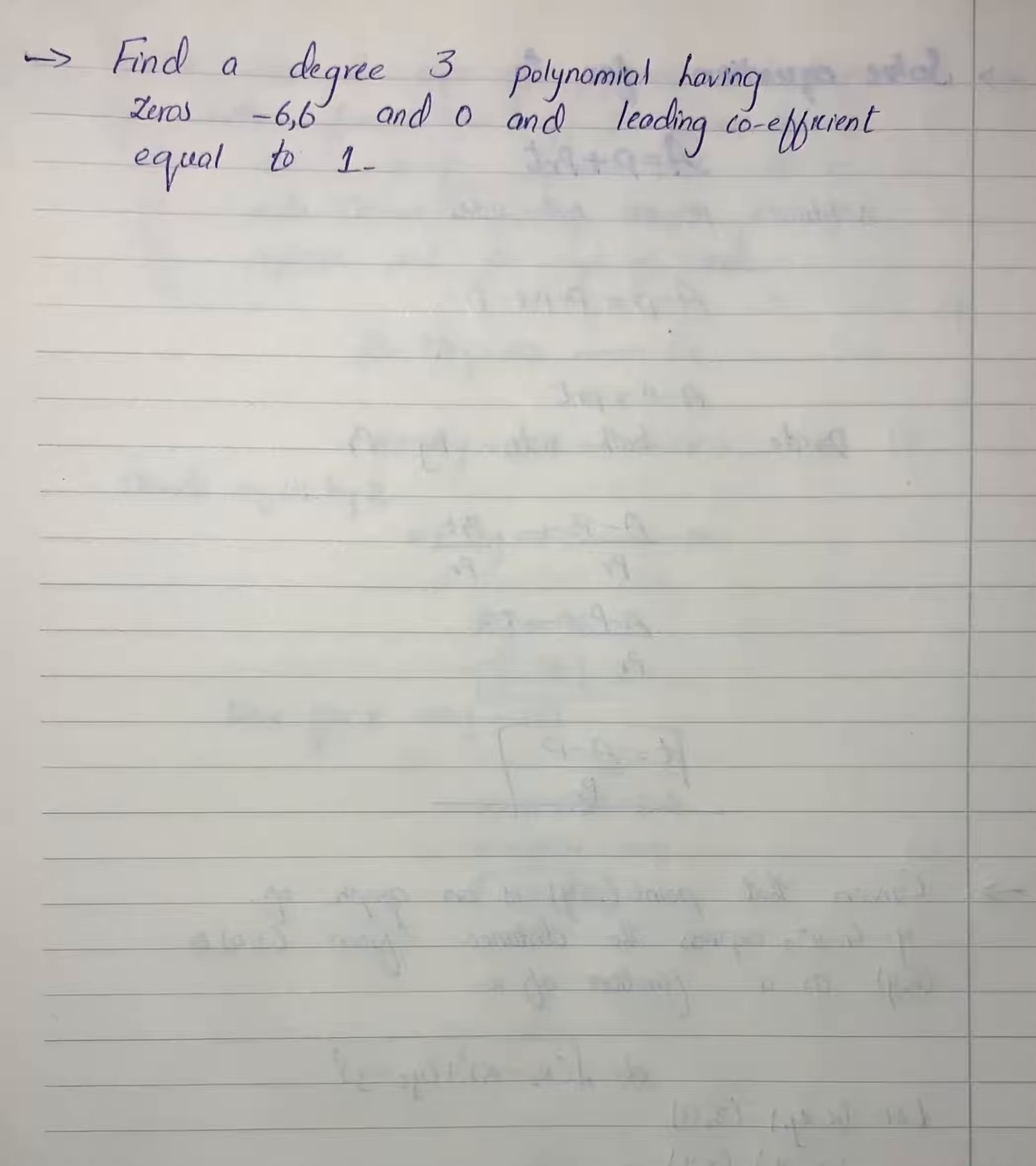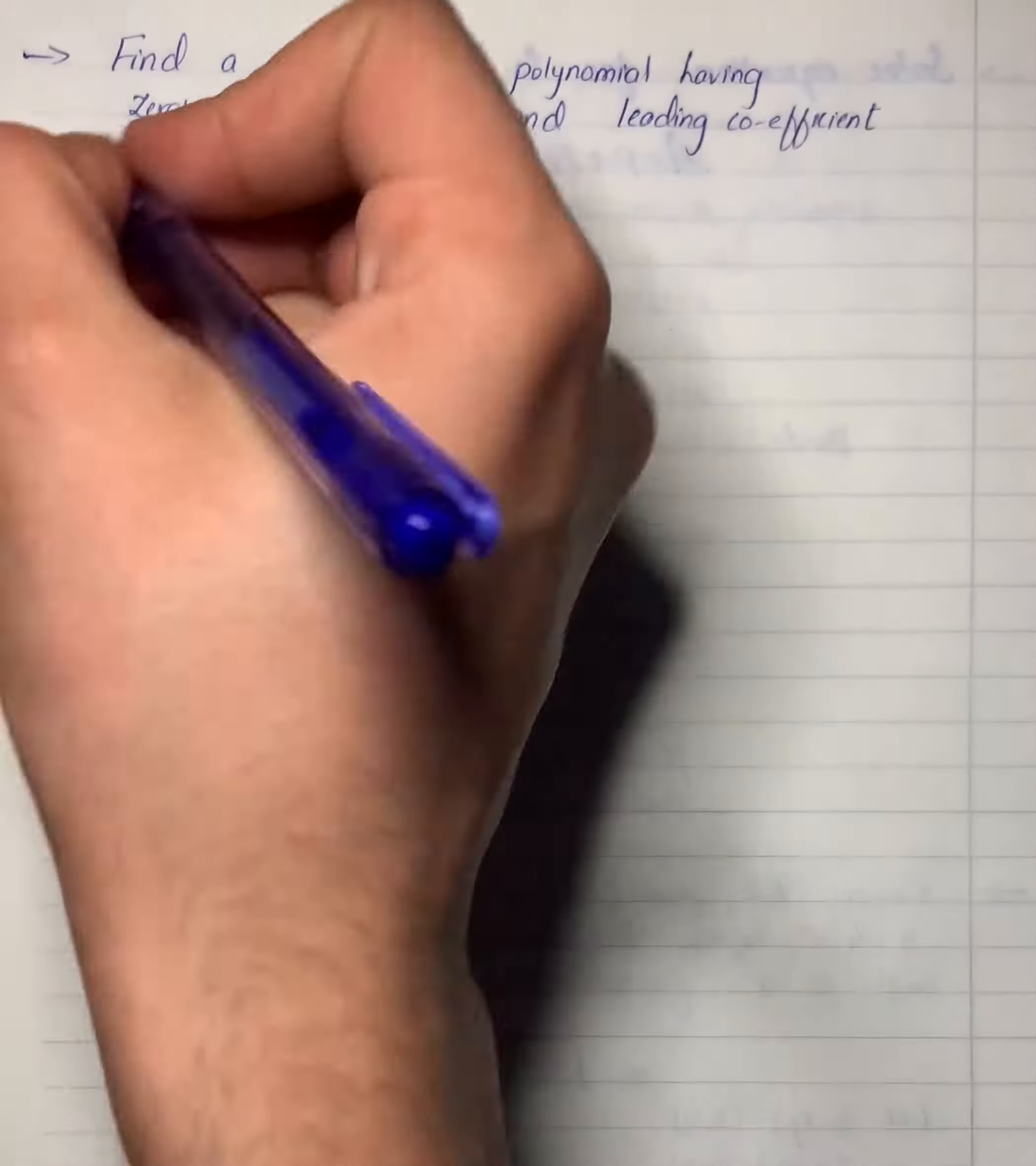If c is a zero of a polynomial, then x minus c will be a linear factor of this polynomial, right? Given the zeros -6, 6, and 0, we can make conclusions. So let's start.